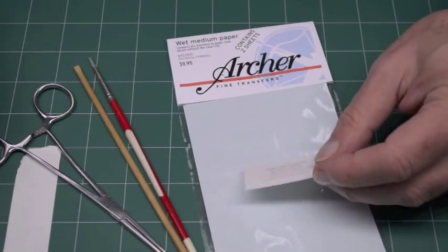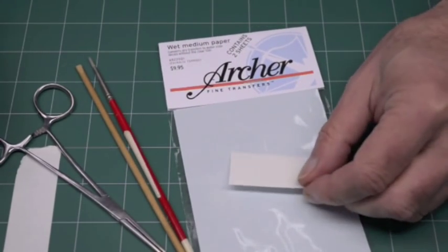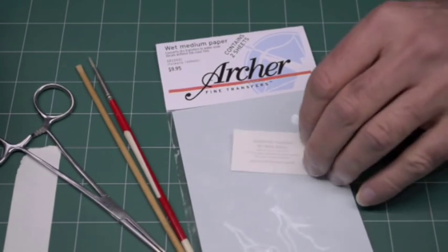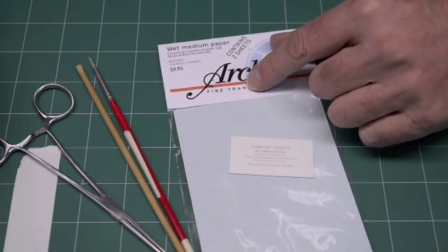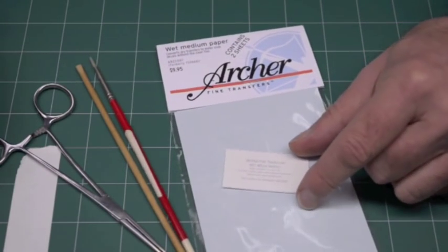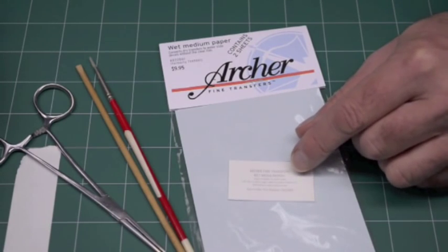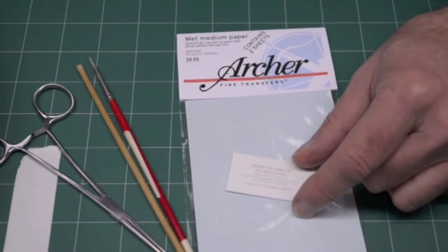Wet media paper is water-absorbent paper with a water-soluble release agent on one side. You can either buy it in a package like this from our website, or if you order uniform patches or instrument faces or other small things, you'll get a sample in with your package.